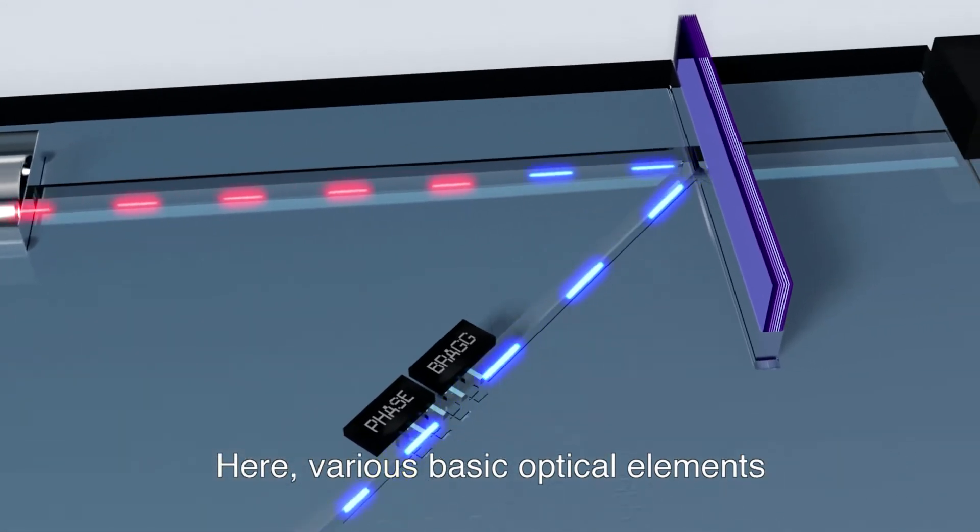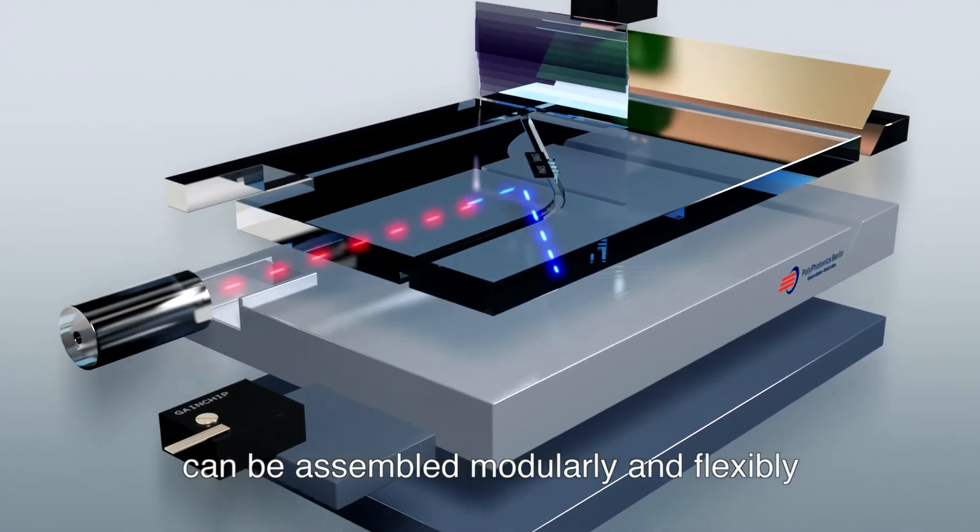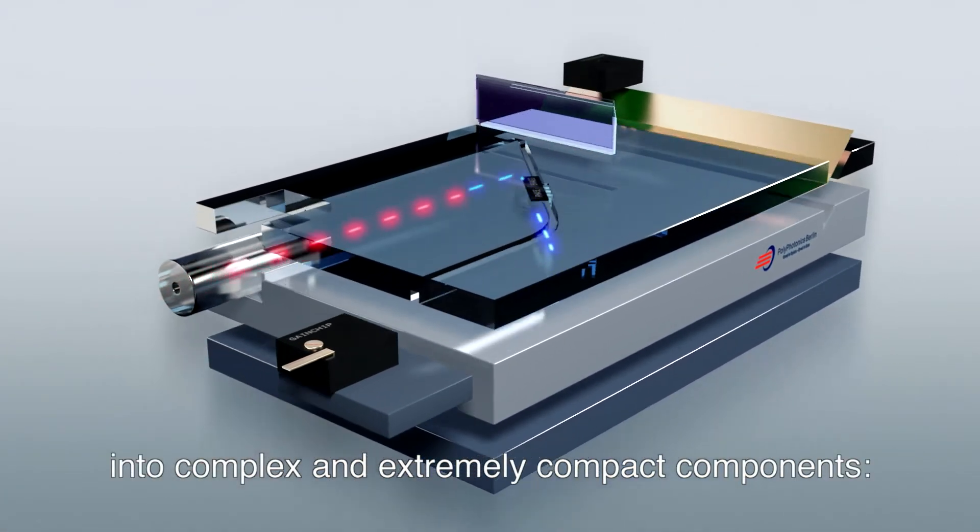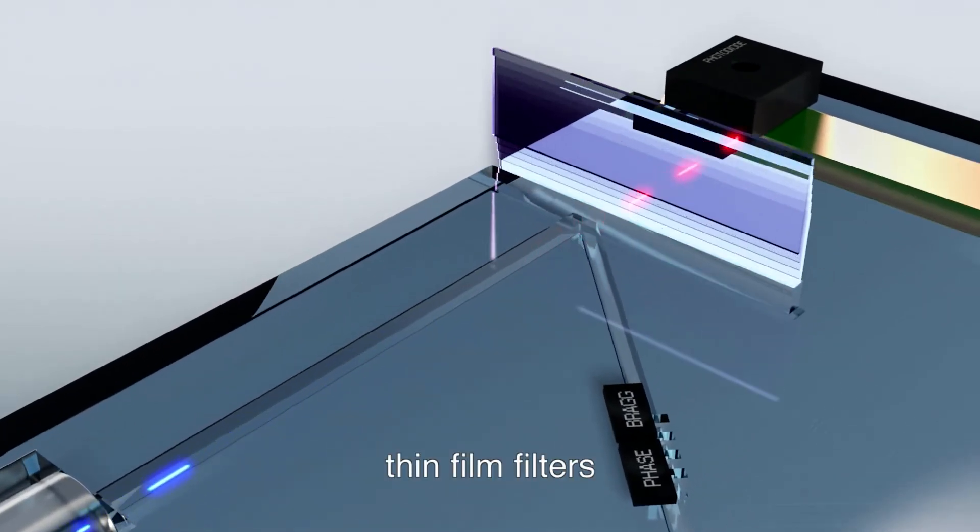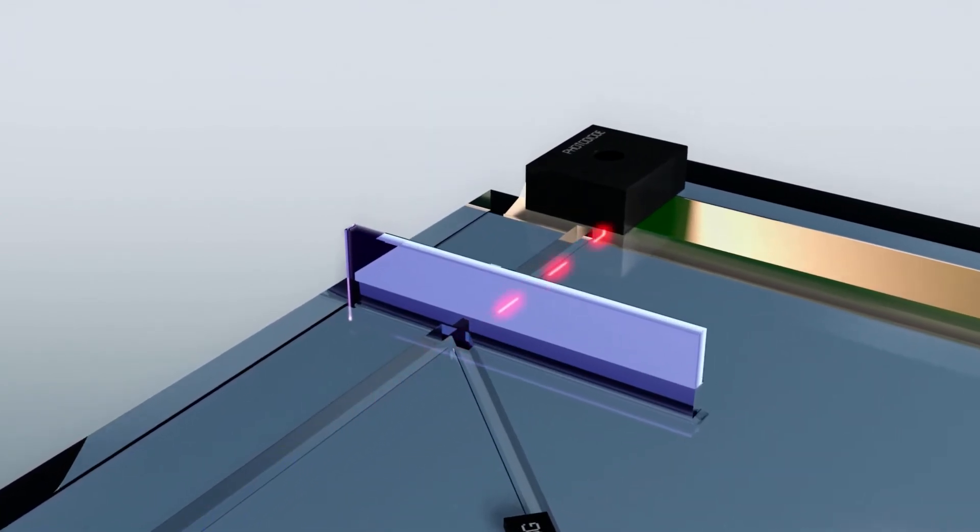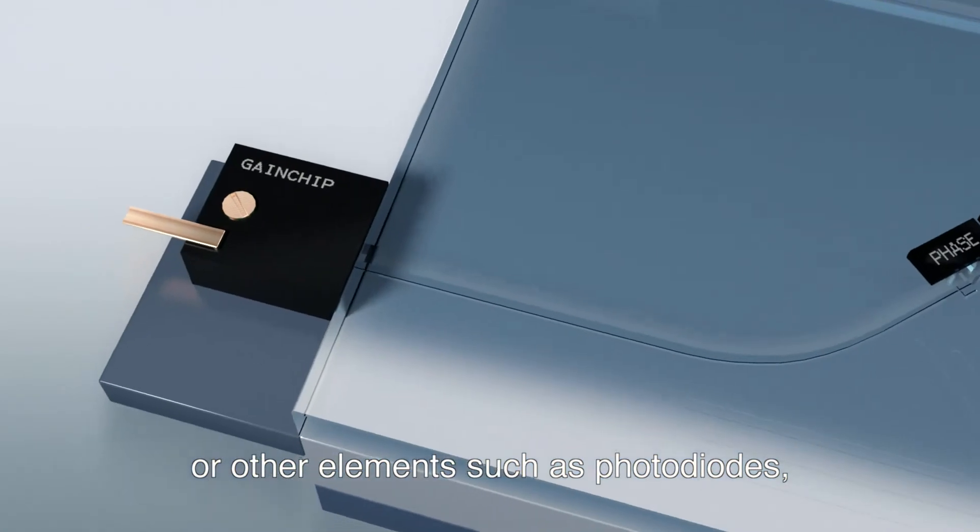Here, various basic optical elements can be assembled modularly and flexibly into complex and extremely compact components, with connections for fiber optic cables, thin film filters, micro-optics, or other elements such as photodiodes, gain chips, or lasers.